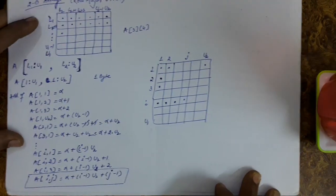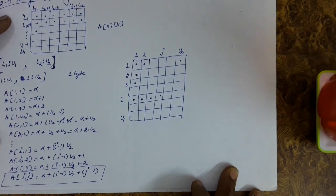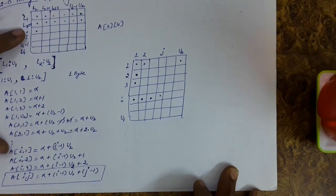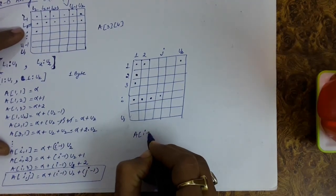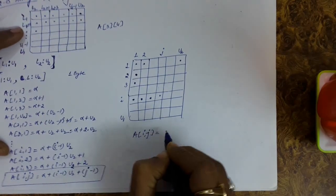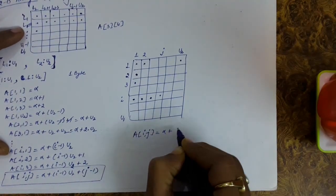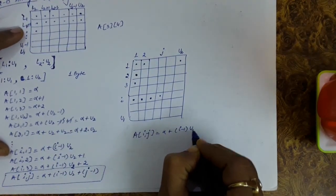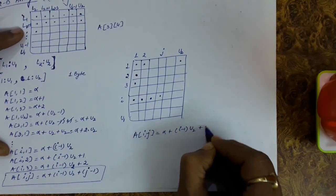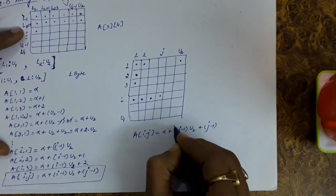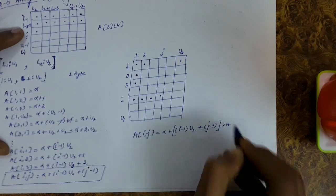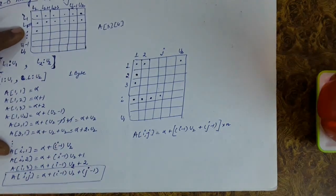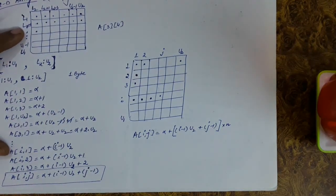Now let's remove the first assumption. If every element requires n bytes of storage instead of 1 byte, then the formula becomes: address of a[i][j] = alpha + [(i - 1)*U2 + (j - 1)] * n.